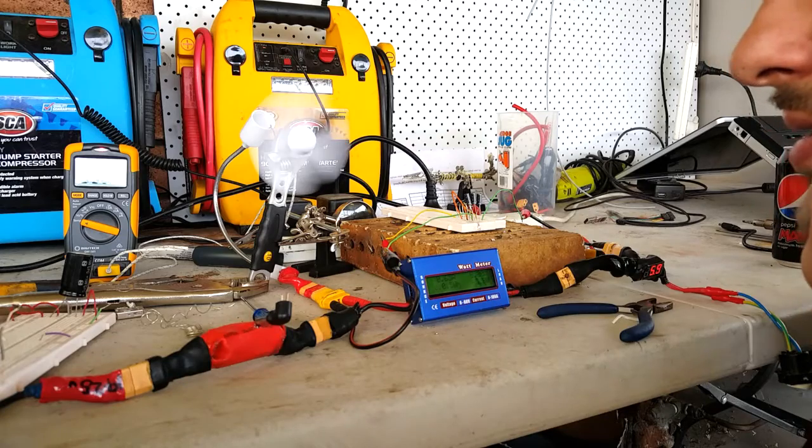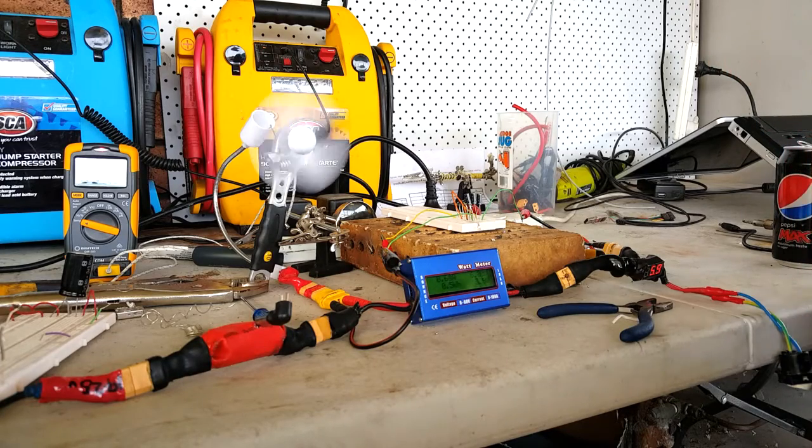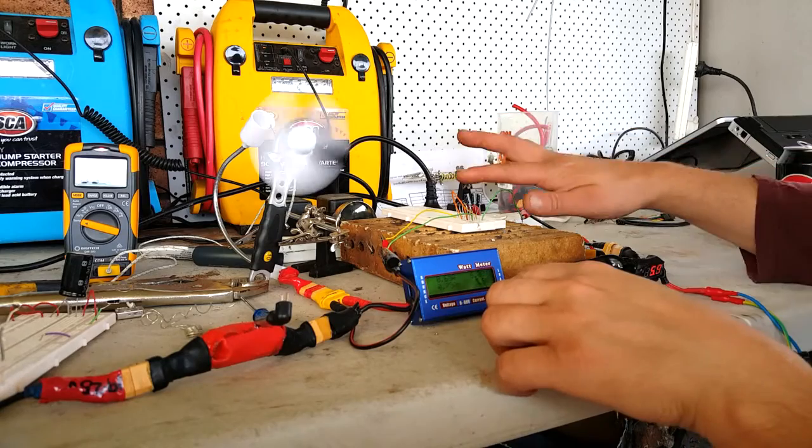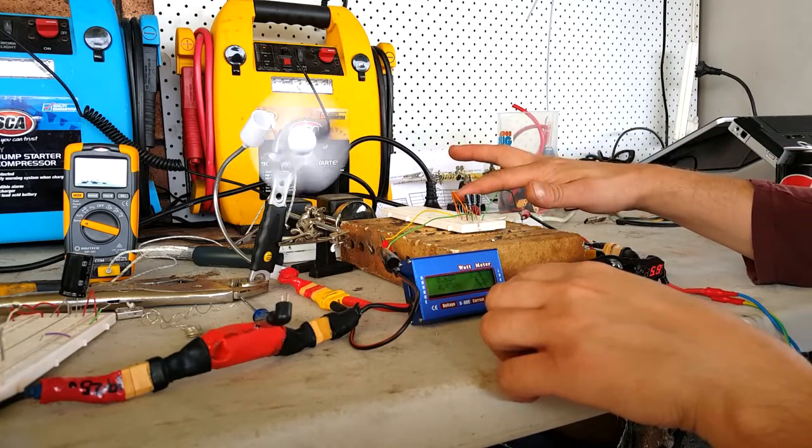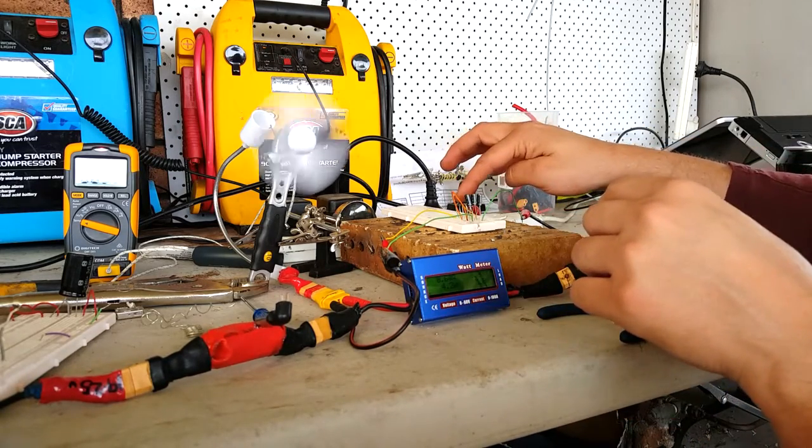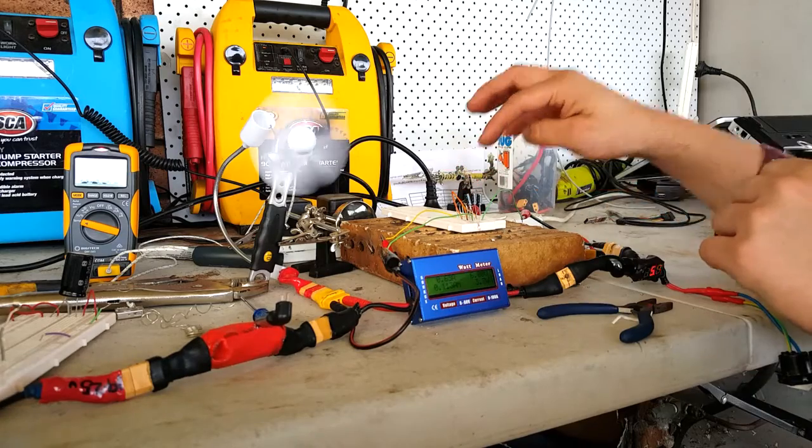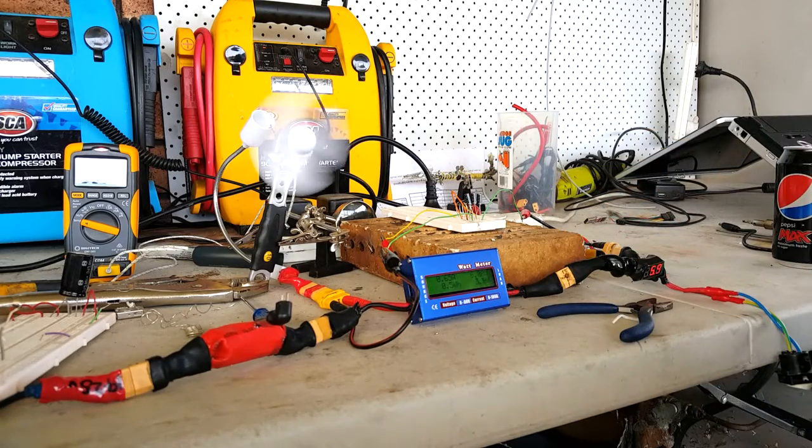You can already hear the motor getting some speed wobbles. The voltages are smooth now though. Caps are doing the job, so are the diodes. It's only at 0.6 amps so well within tolerance.